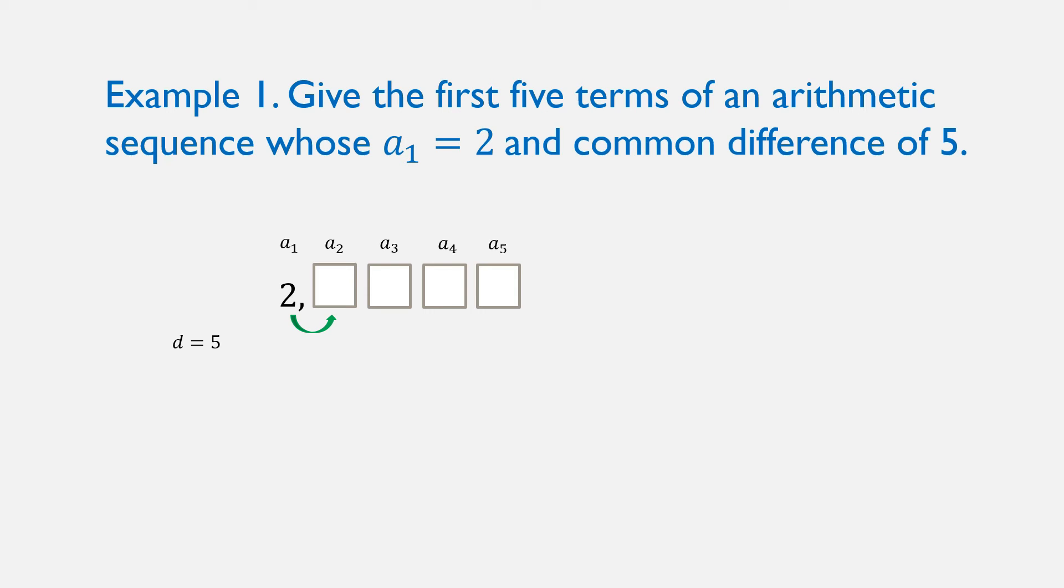Since it is positive, we're going to add 5 in every term from the first term, which is 2. We have 2 plus 5 is 7, 7 plus 5 is 12, 12 plus 5 is 17, and 17 plus 5 is 22. That's already our first 5 terms. So it's 2, 7, 12, 17, and 22.